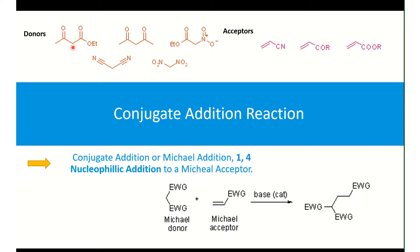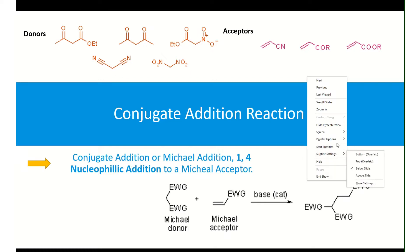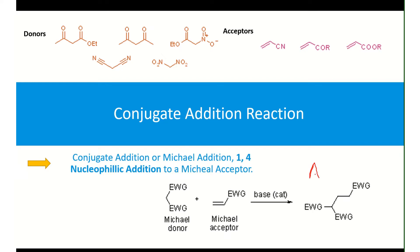If I remove a proton from this alpha carbon, then the enolate that is produced is going to donate to the beta carbon of the Michael acceptor. So generally, we have electron-withdrawing species that can stabilize our enolate, and here we have a species with alpha-beta unsaturation, which is conjugated. The species that results from the Michael donor and Michael acceptor is called the Michael adduct.